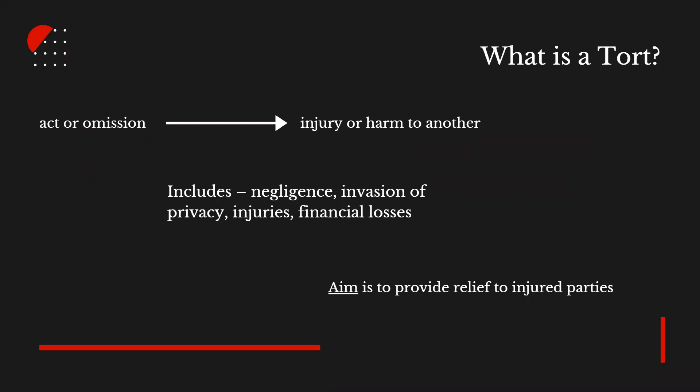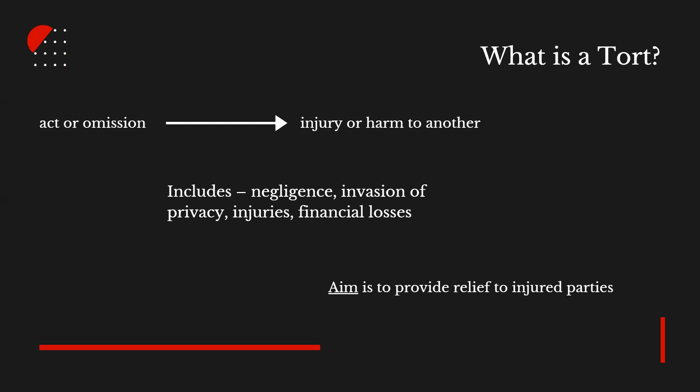A tort is an act or omission that gives rise to injury or harm to another and amounts to a civil wrong for which courts impose liability. 'Injury' describes an invasion of any legal right, whereas 'harm' describes a loss or detriment in fact that an individual suffers. This includes negligence, invasion of privacy, financial losses, etc. The primary aim of tort law is to provide relief to injured parties for harms caused by others.